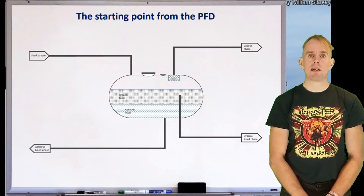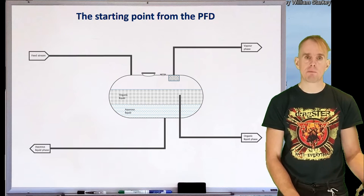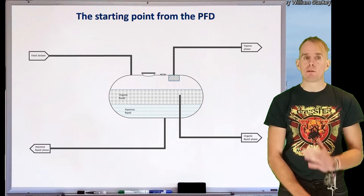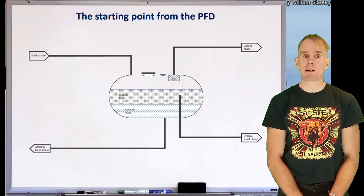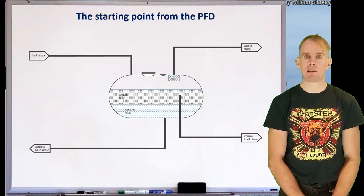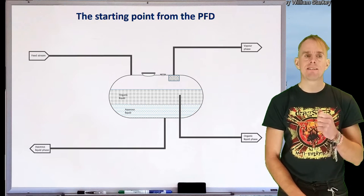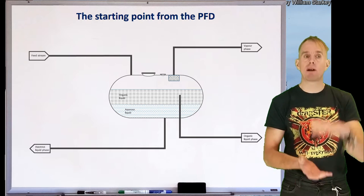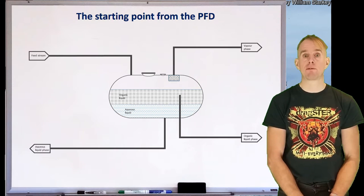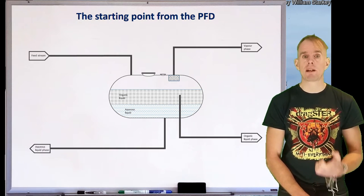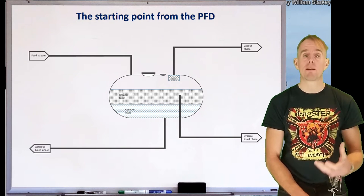Here on my whiteboard is a simple sketch of such a unit. On the top left we have our feed stream coming in, which will be multi-phase: vapour plus two immiscible liquids. On the top right we have a stream for our vapour phase to leave, on the bottom right our organic phase leaving, and on the bottom left our aqueous phase leaving. We'll assume the organic density is less than the aqueous density, so the organic layer floats on top. We'll also assume the organics are flammable, so we'll make best efforts to remove electrical items away from areas where they can contact a flammable gas.